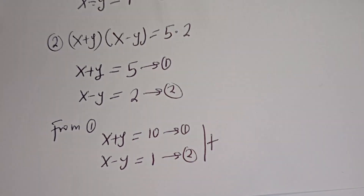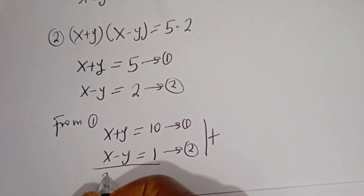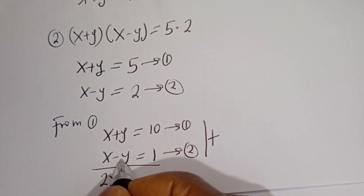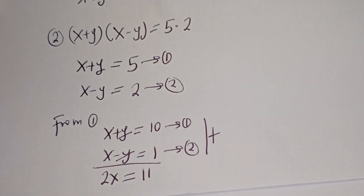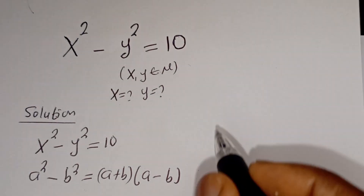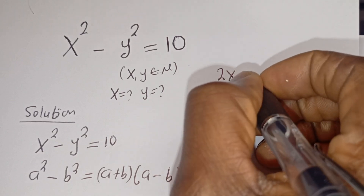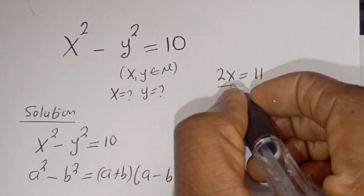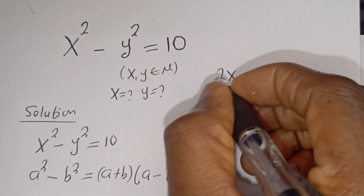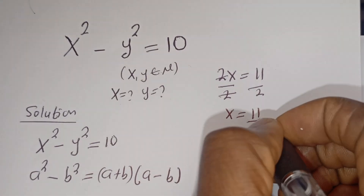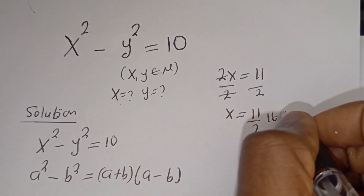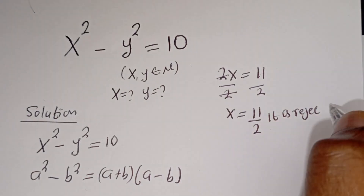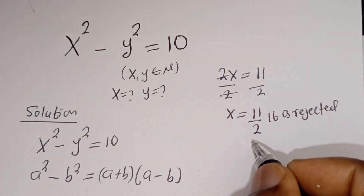Adding the two equations together: X plus X gives 2X, and Y minus Y cancels, equal to 10 plus 1, which is 11. So 2X is equal to 11. Dividing both sides by 2, X is equal to 11 over 2. Is 11 over 2 a natural number? No — it is rejected, because it is not a natural number.